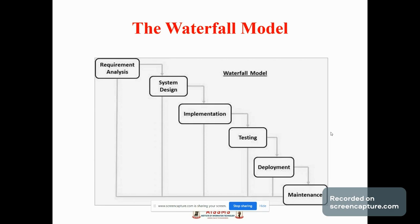In the implementation phase, the development team works on coding the project. They also perform several other activities, like a senior developer reviewing other developers' code for any issues. In the testing phase, the testing team tests the complete application and identifies any defects. These defects are fixed by the developers, who also perform regression testing to see if any new defects were introduced.